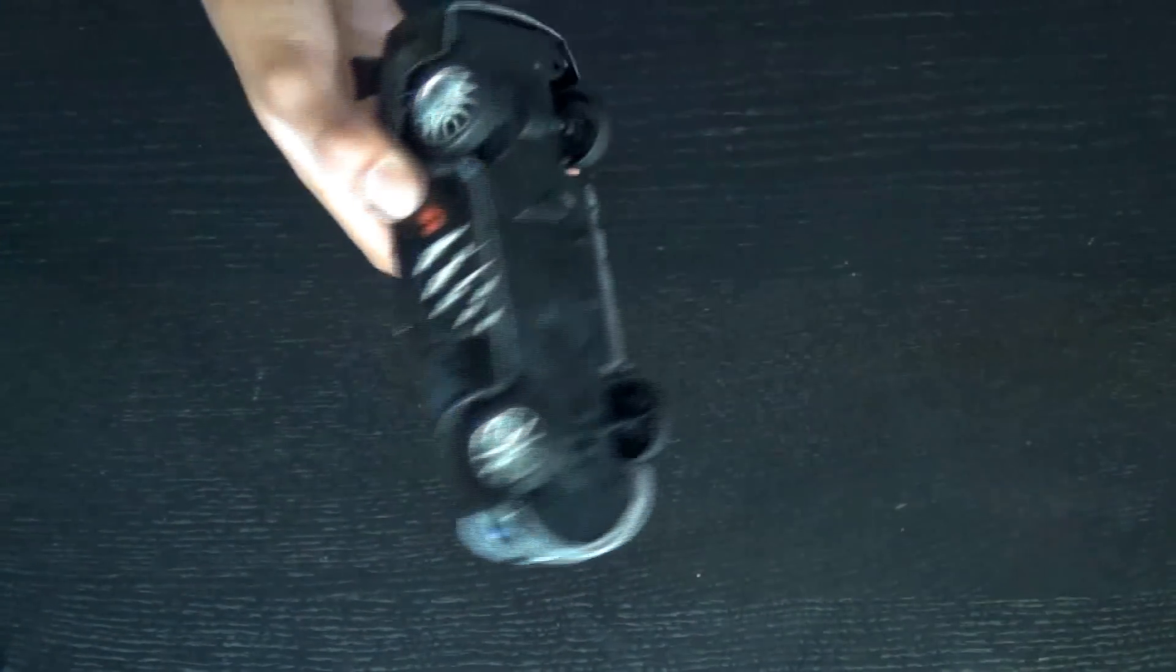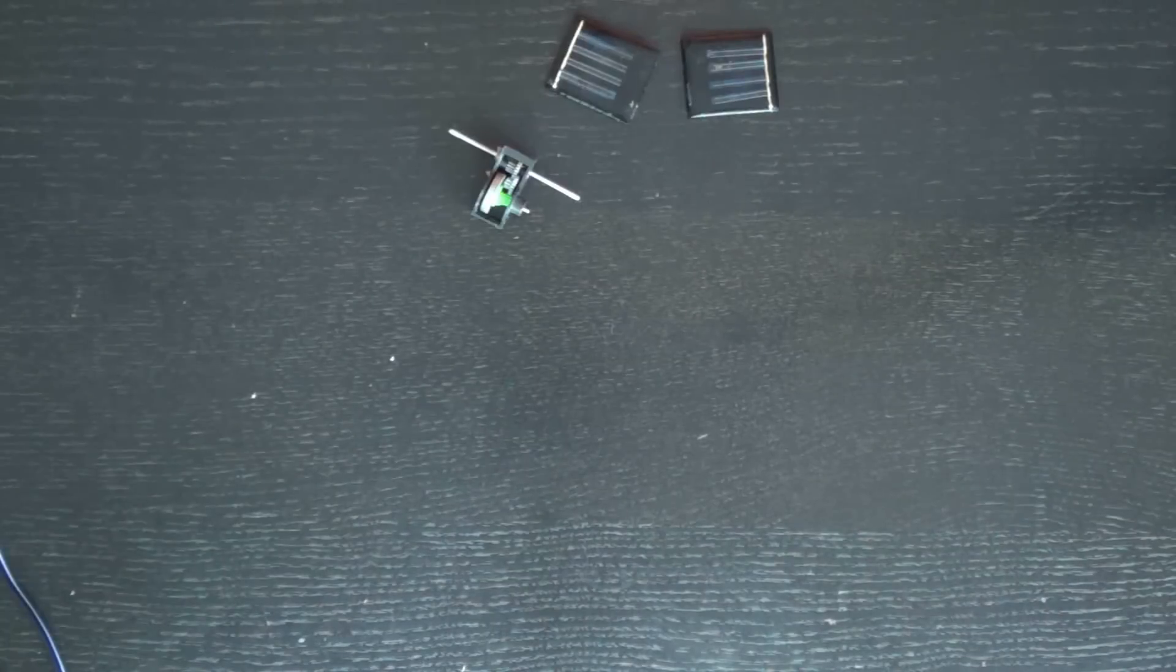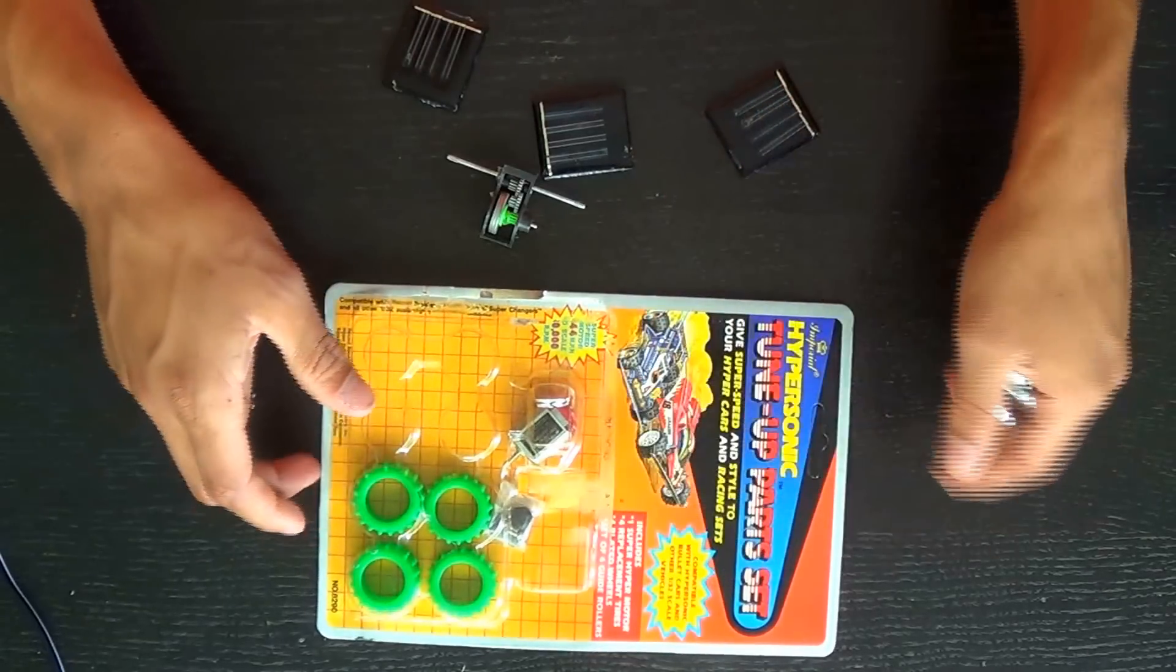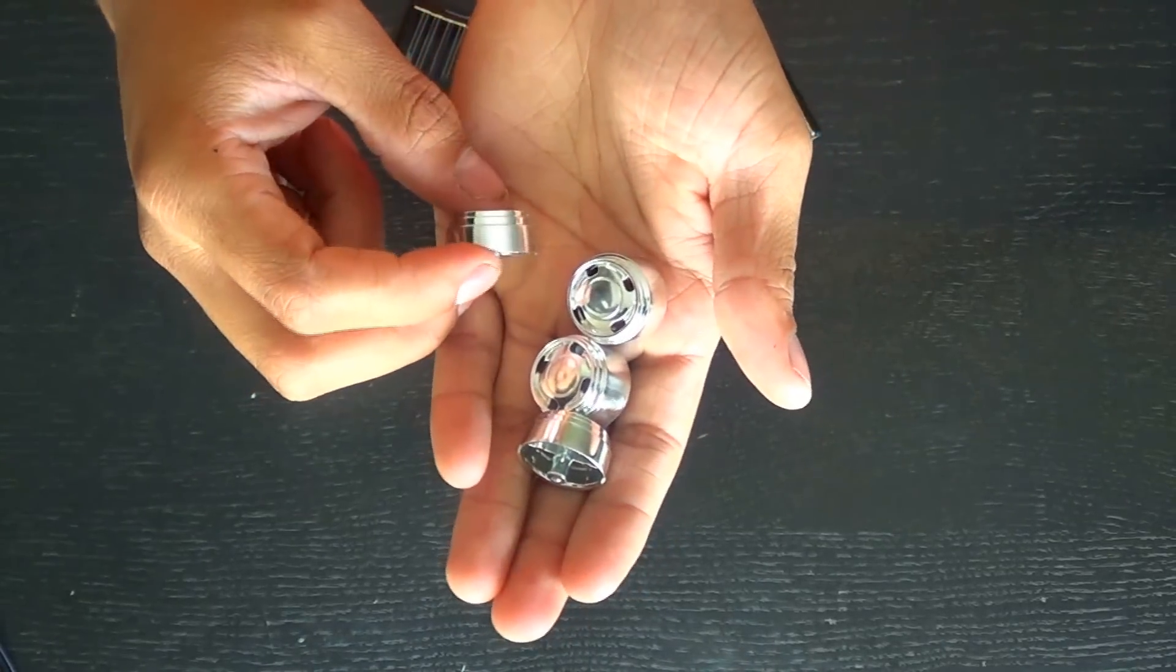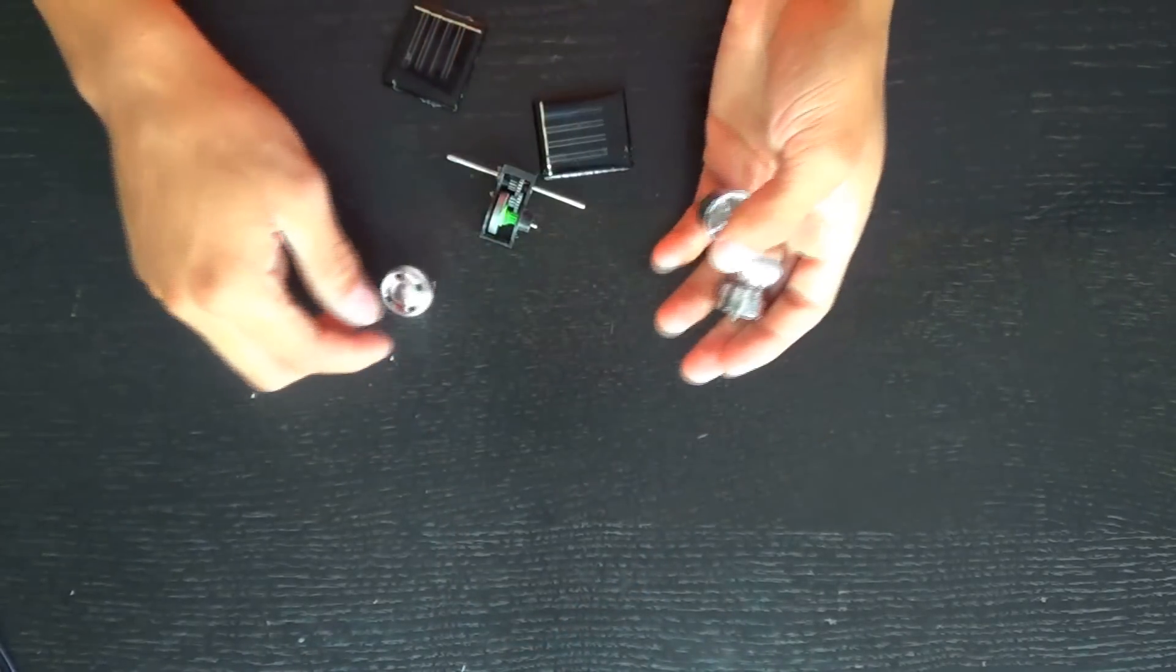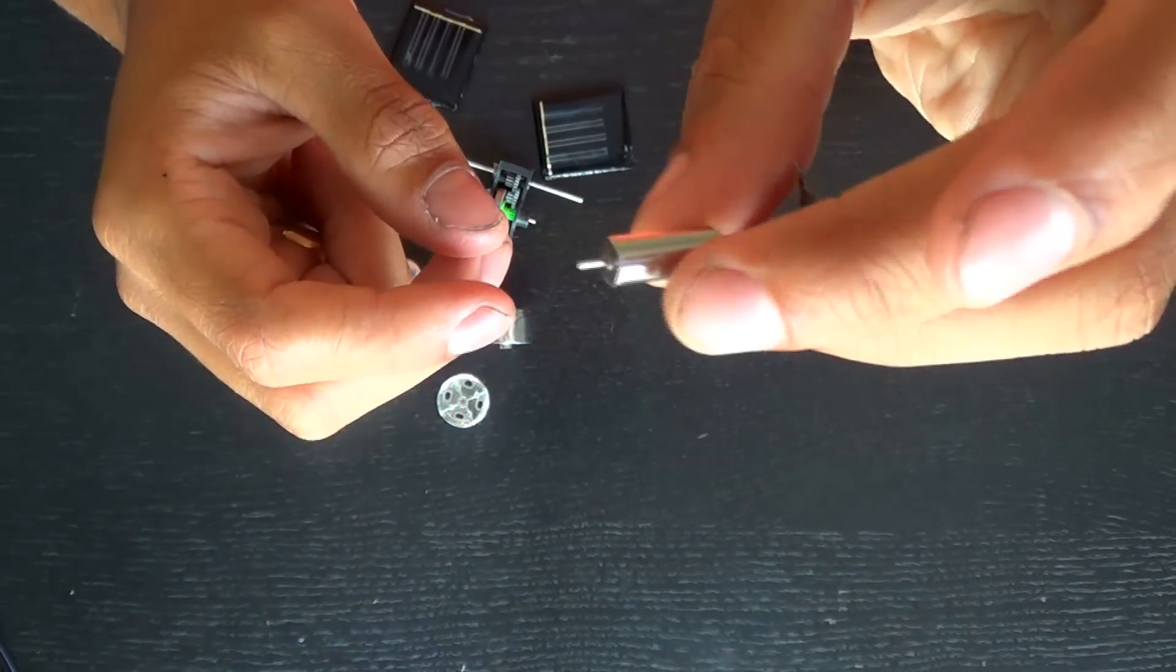First we're going to start off with this friction activated car that I found at the dollar store. Basically what we want from it is the gearbox inside. These three solar panels here I got from solar pot lights from the dollar store, and I also bought a set just for the wheels. Here's a motor - I'll post a link to where you can buy that.